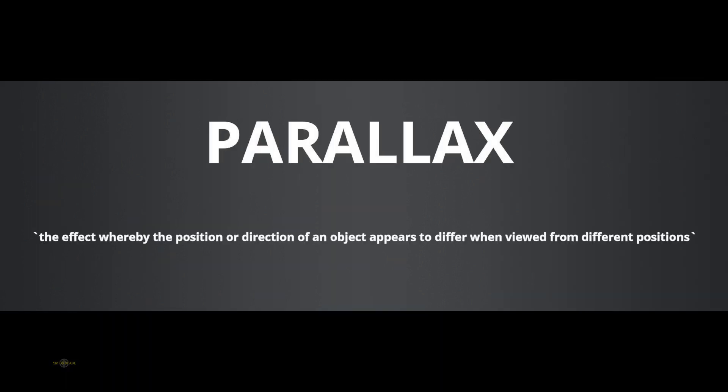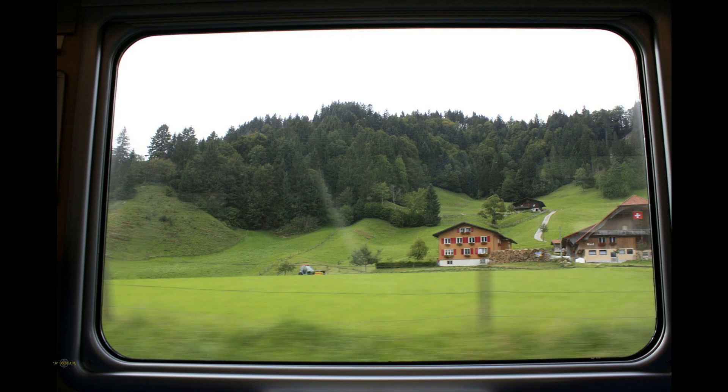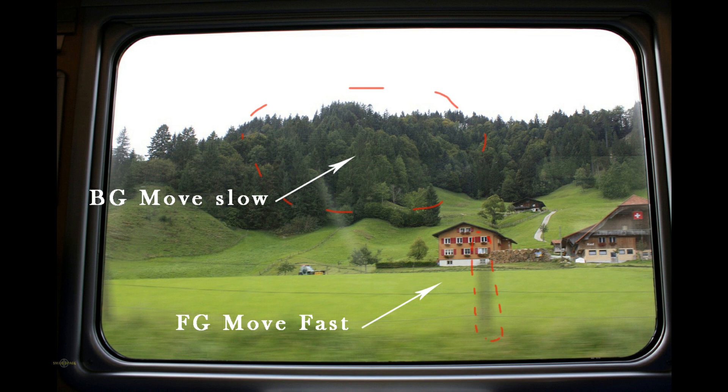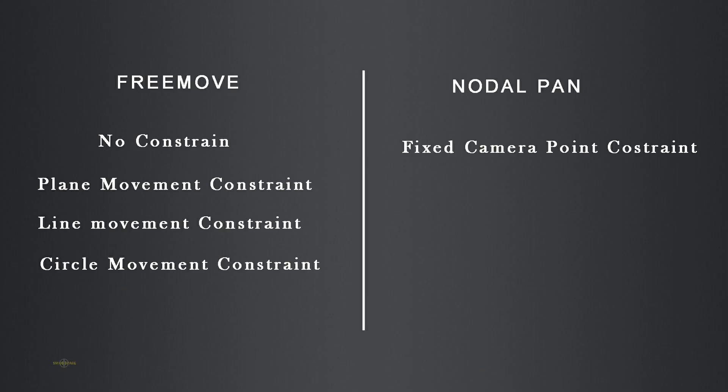Do you know what parallax is? While traveling, you must have noticed that objects nearby move very fast and objects far from us move very slowly. This happens because we are moving from one position to another. The difference in movement between these two objects is called parallax. Parallax happens because of translation, so in this list, except nodal, all other camera constraints will have parallax in the camera view.